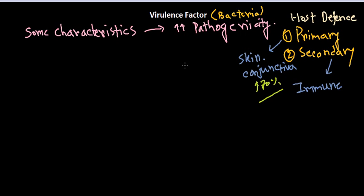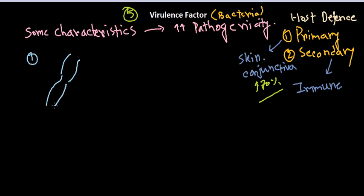In the case of bacteria, they need to have a sequential move to finally colonize inside some host tissue or host cell. The virulence factors involve five different stages. The first stage is simply entry into the host body.